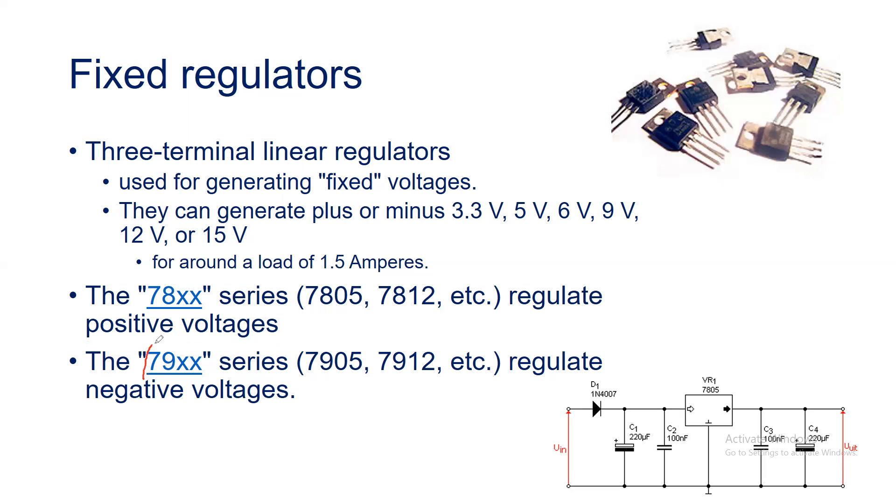Similarly, there is IC series 79xx. 79 will make you understand that it is used to generate and regulate negative voltages. The series has these ICs such as 7905 and 7912. So 05 signifies it will regulate minus 5 volts at the output. 7912 means it will regulate negative 12 volts at the output.